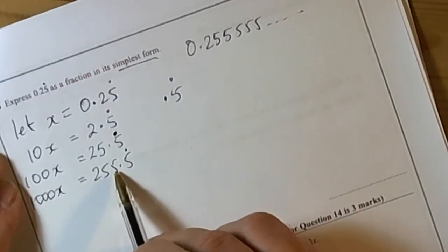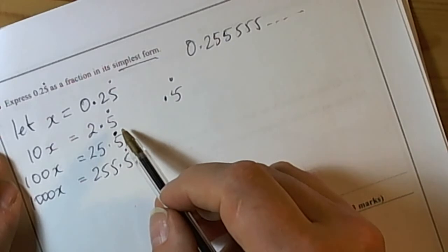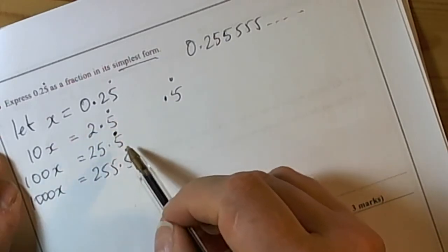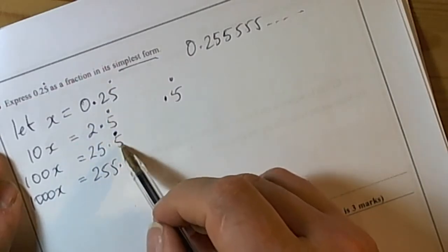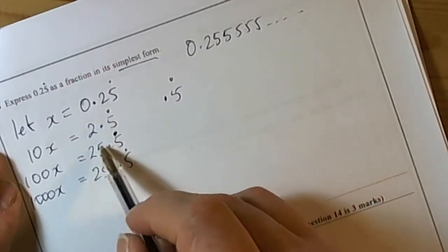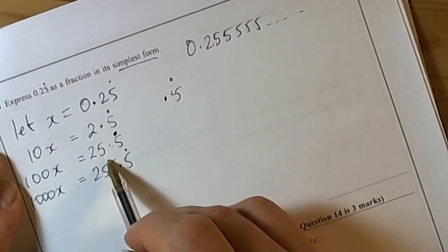100x, 1000x, and in that way we'll keep moving the decimal up place values until we get two equations with the recurring part straight after the decimal point. We can see that when we did 10x and 100x we got what we wanted.